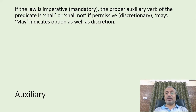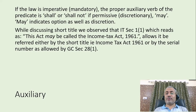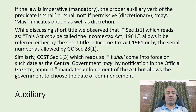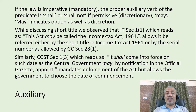But if the law is permissive, then it is 'may'. 'May' indicates option as well as discretion. For example, income tax section 1 subsection 1 reads: 'this act may be called the income tax act 1961', allowing it to be referred by the short title. Similarly, CGST section 1 subsection 3 reads: 'it shall come into force on such date as the central government may by notification in the official gazette appoint.' It mandates enforcement of the act but allows the government to choose the date of commencement, so we can see both 'shall' and 'may'.